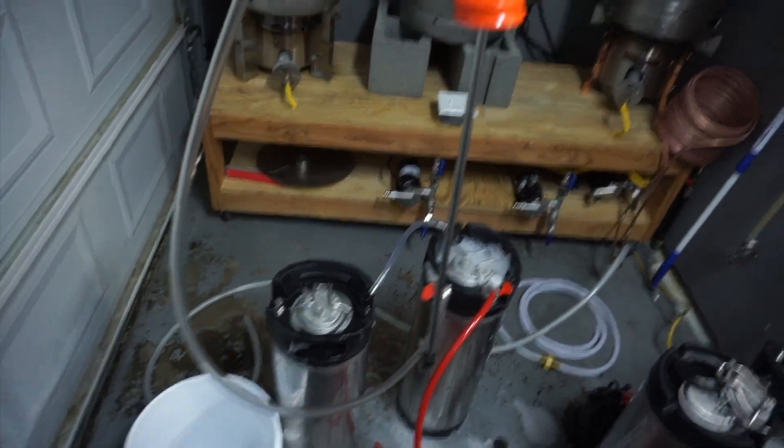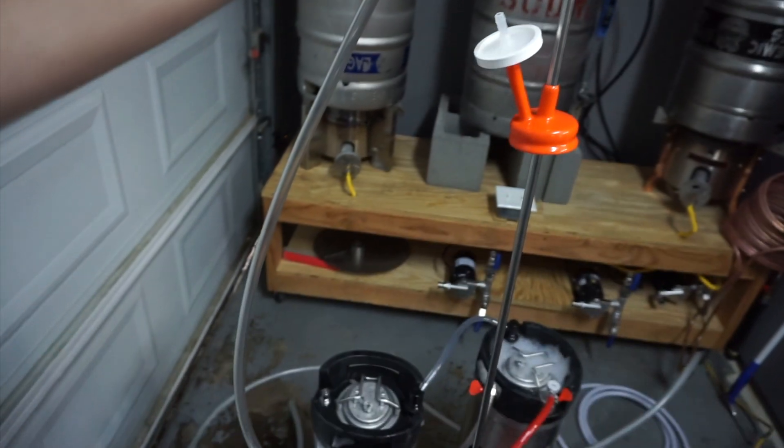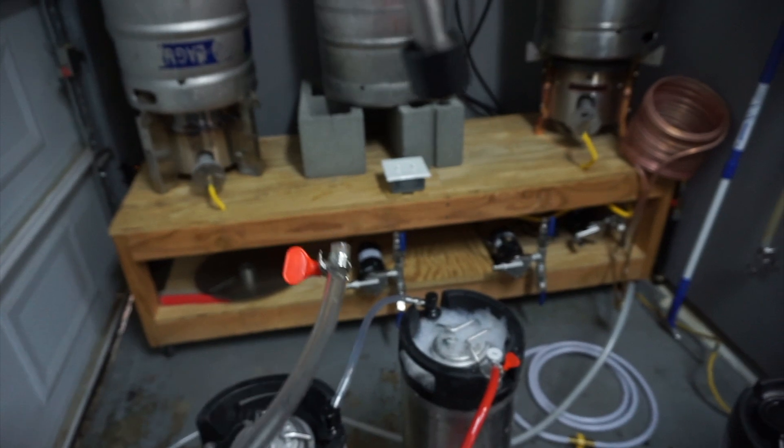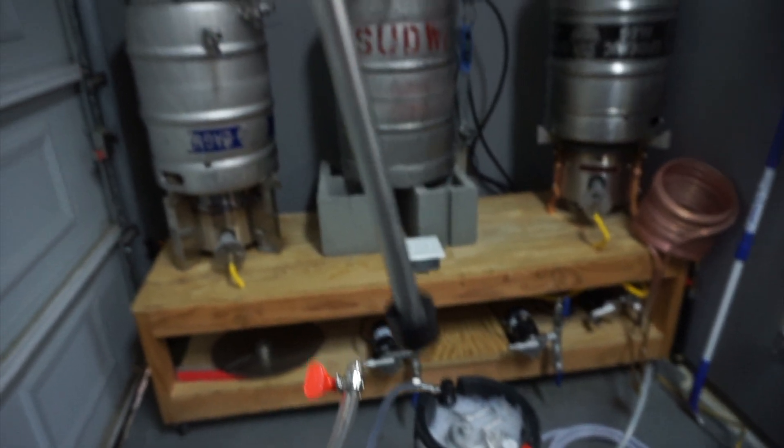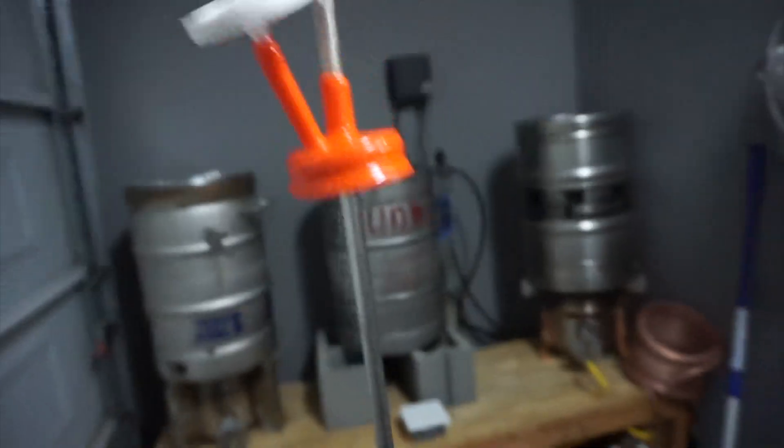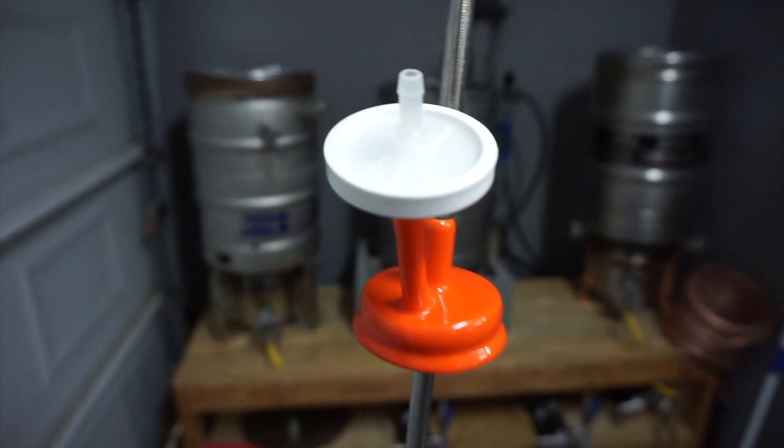This is the racking cane setup I use to transfer out of the carboy. It just sits over the mouth of the carboy with this little racking cane with a little blocker for the trub and yeast cake. Put this in, fill with CO2 at a very low rate, probably like 2 PSI or so, and it pushes the beer out of here.